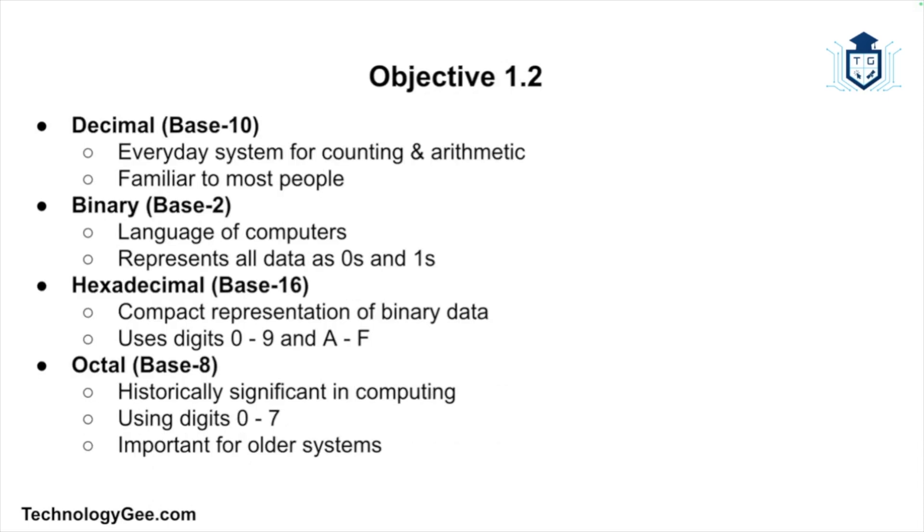To wrap all of this up, here is a quick recap. Decimal, also known as base 10, is the system we use every day for counting and arithmetic. Binary, known as base 2, is the language of computers representing data in zeros and ones. Hexadecimal notation, also known as base 16, is used to represent binary data more compactly with digits ranging from 0 through 9 and A through F. Then we have octal or base 8, which was historically important in computing, especially with older systems, and uses digits 0 through 7.